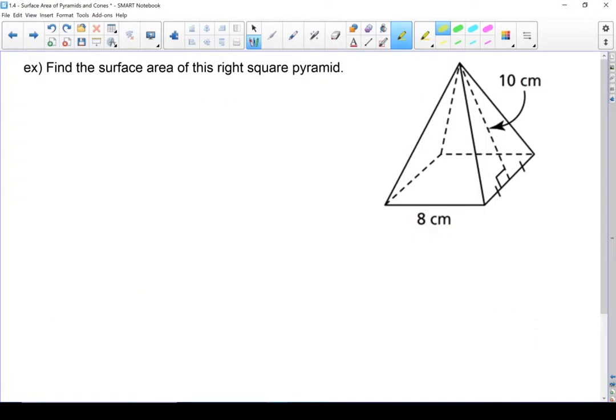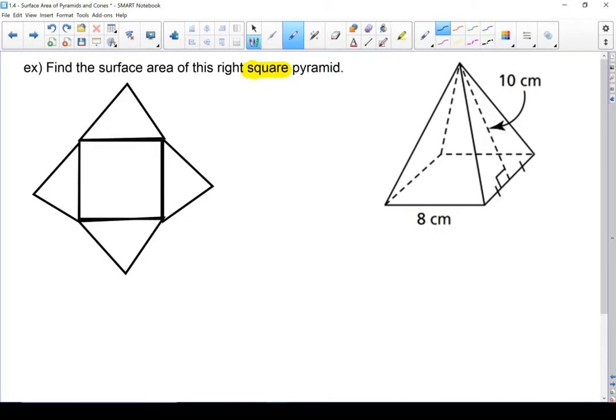Let's move on to finding the surface area of this right square pyramid, and this is where I would like you to draw a net. Take that shape and unfold it. We have to keep in mind that if the base is a square, all four lateral faces are going to be the same.